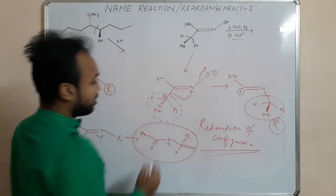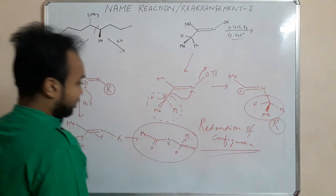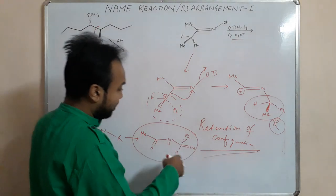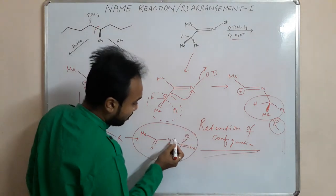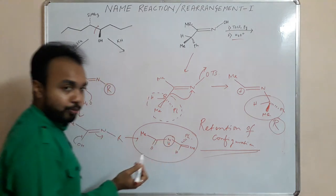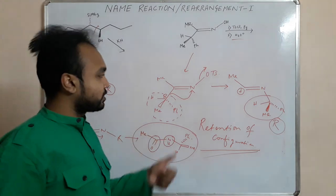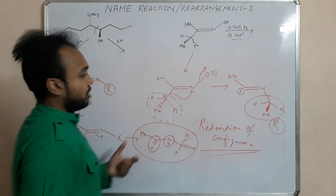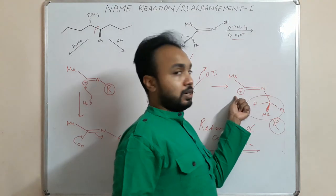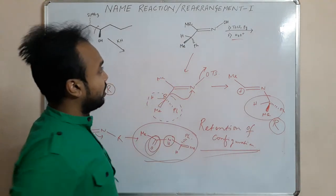So this is our product. Just try to remember: the group which will migrate will be attached to the N group, and the center from which it gets migrated, that center becomes a keto center. So this is the example of Beckman rearrangement.